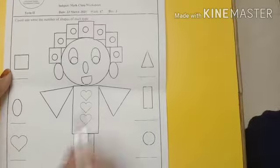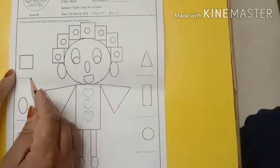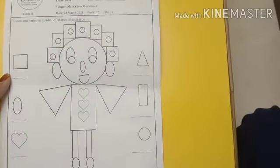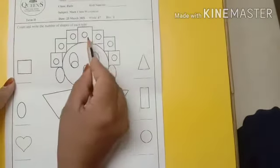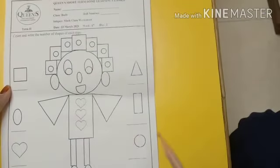Now see, here shapes are there and on this line you have to write the numbers. Now see, this is a square. Now let us search. Where are squares? Is this a square? Yes! One square.